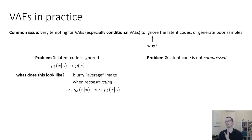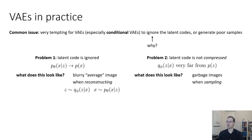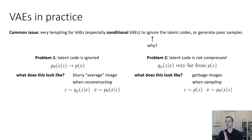A second, very different problem is that the latent code is not compressed — q_phi of z given x is very far from p of z. If that's the problem, your reconstructions will look great; the VAE is too much like an identity function. But when you actually sample z from p of z and decode, you'll get garbage — a really ugly, unrealistic image.